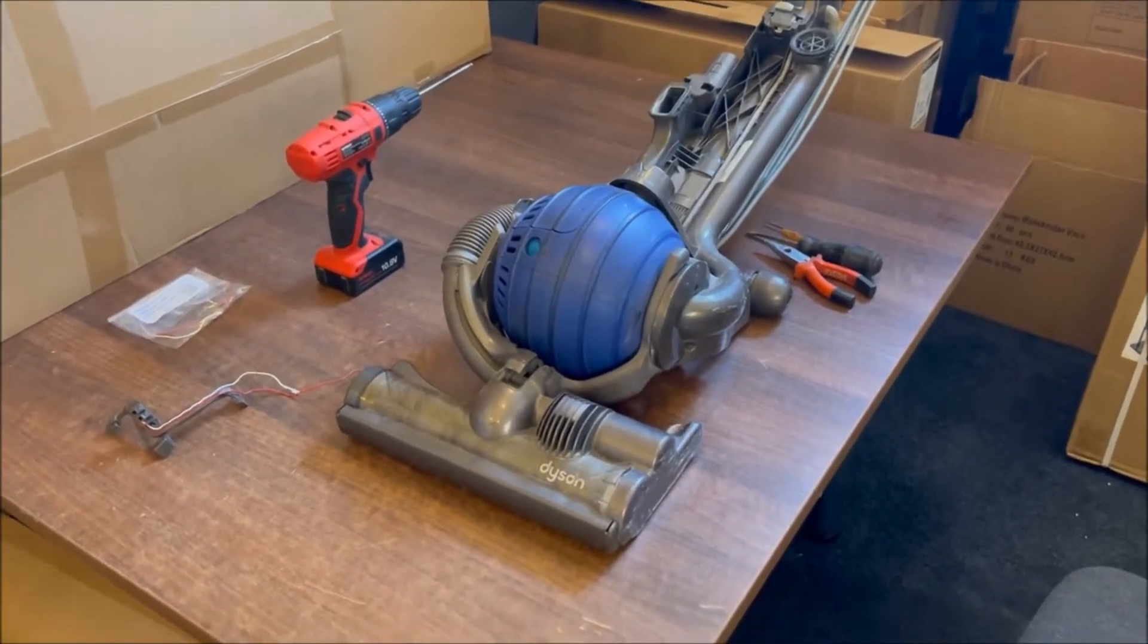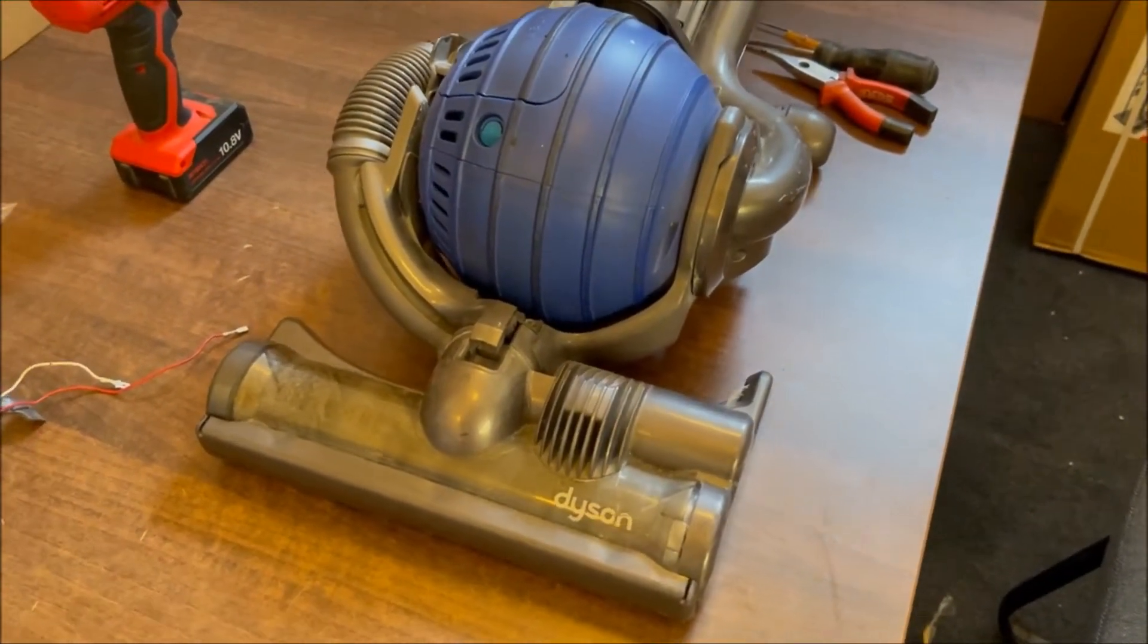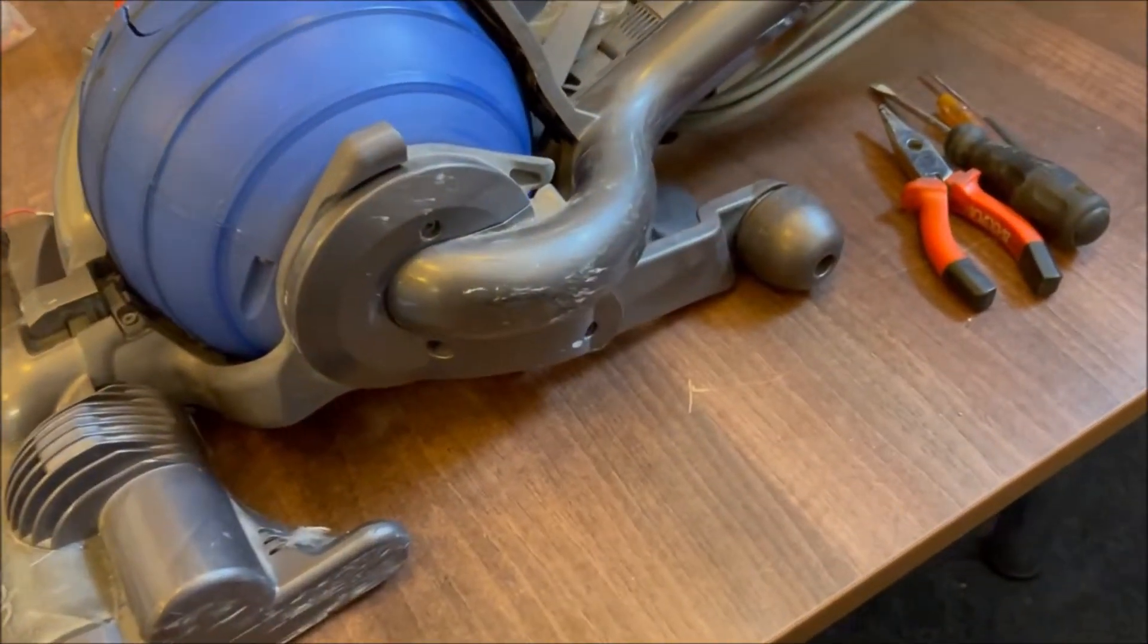Today we're going to show you how to fit a replacement yoke loom on your Dyson DC25, which stops the power going to the cleaner head typically.